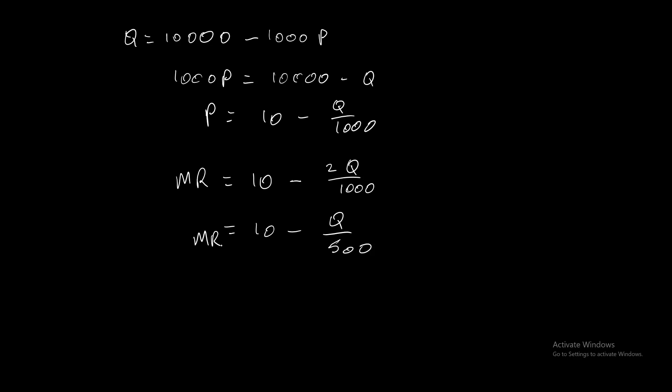This is your marginal revenue. Your marginal revenue will always have the same intercept and twice the gradient as long as your demand curve is linear. So as long as the demand curve is linear, the marginal revenue would have the same intercept and twice the gradient.